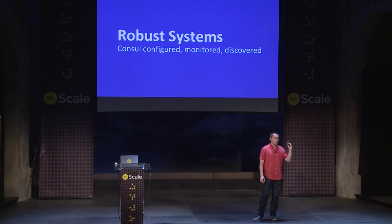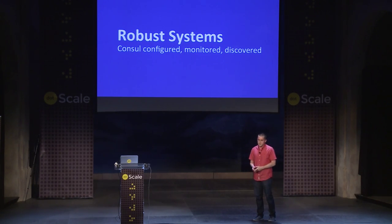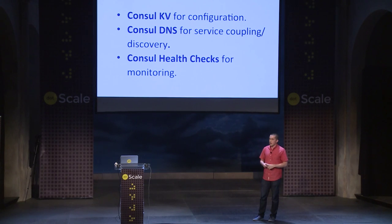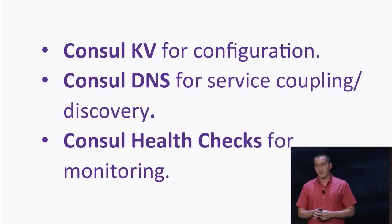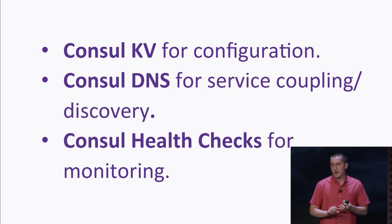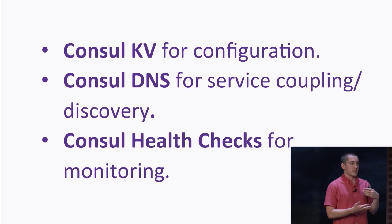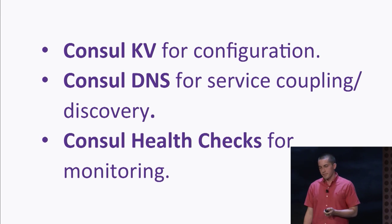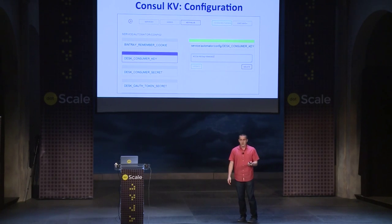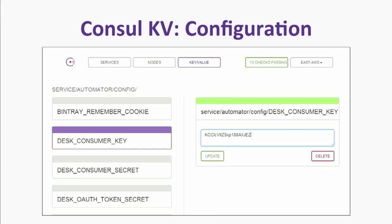Now let's bring it all together — how do we build robust systems using Consul to answer these questions? The way to build a robust system is to use the Consul KV for configuration, Consul DNS for coupling services together and doing service discovery, and Consul health checks for monitoring services and the nodes they live on. For configuration, Consul has a web interface where you can modify key-values — for example, editing a 'desk consumer key' in a namespace and setting some value.